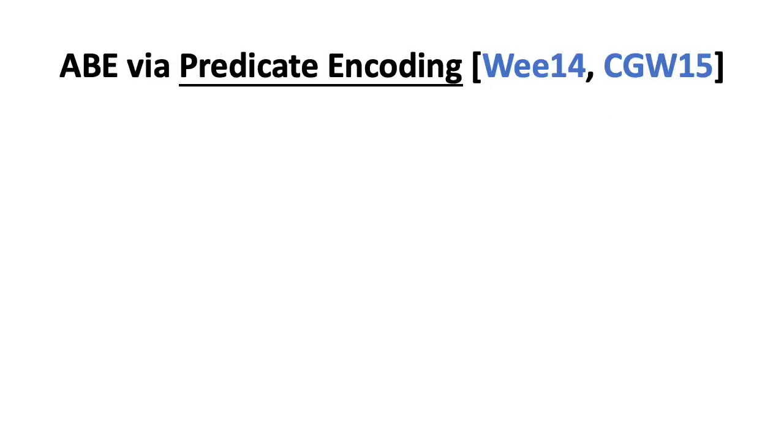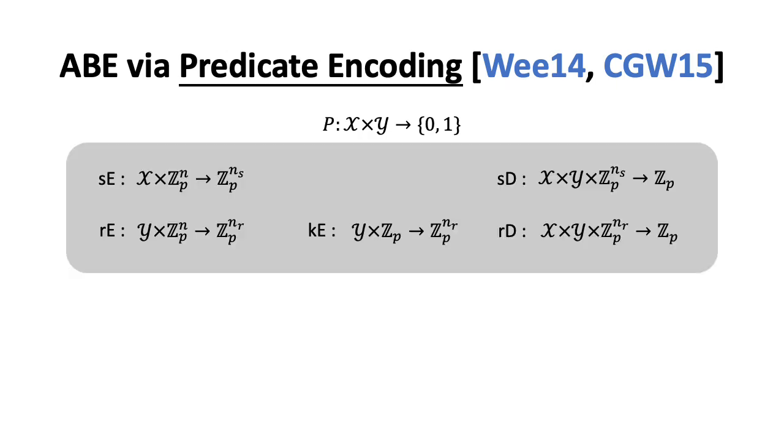In this work, we use the notion of predicate encoding. It is a simpler description of ABE with a statistical one-time secret key security flavor. Typically, it consists of five linear algorithms over domains X, Y, and ZP. In the last example, we can use sE(x,w) to encode the encryption, use kE(y, alpha) plus rE(y,w) to encode the key generation. And in the decryption, we can use sD and rD to recover alpha by the property of predicate encoding. Then, we can obtain the message.